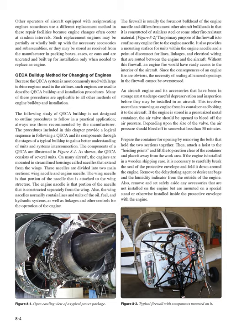The firewall is usually the foremost bulkhead of the engine nacelle and is constructed of stainless steel or other fire-resistant material. The primary purpose of the firewall is to confine any engine fire to the engine nacelle. It also provides a mounting surface for units within the engine nacelle and a point of disconnect for lines, linkages, and electrical wiring routed between the engine and the aircraft. Without this firewall, an engine fire would have ready access to the interior of the aircraft, so sealing all unused openings in the firewall cannot be overstressed.